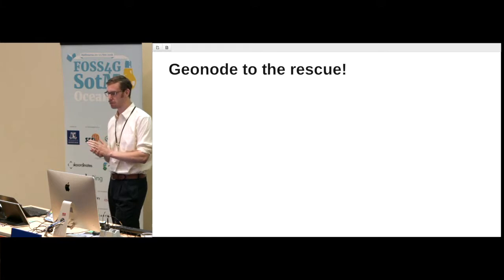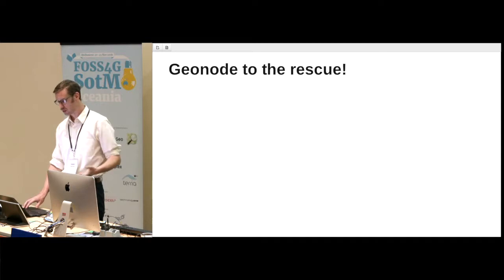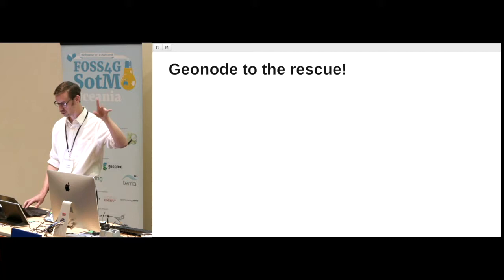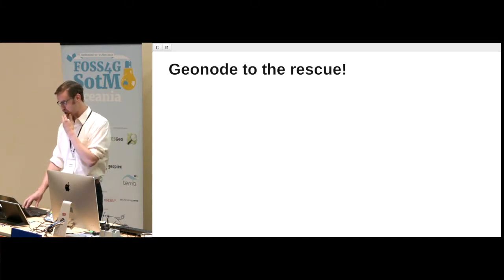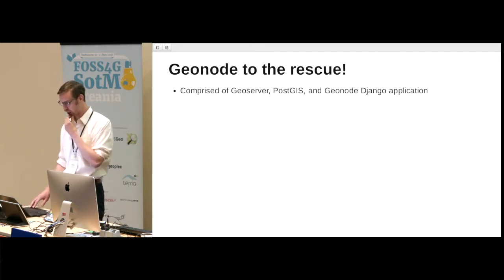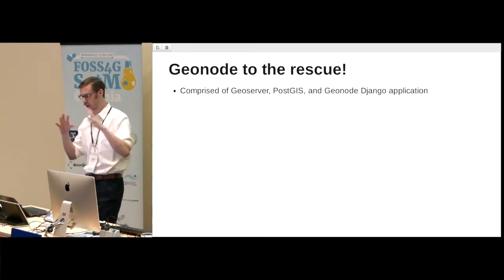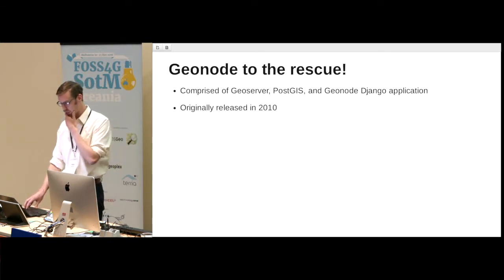So, GeoNode to the rescue. I've been working in the open source geospatial world for quite a while and had only vaguely heard about it until relatively recently — I was just using a GeoServer-based stack most of the time. It's comprised of GeoServer and PostGIS, but it also adds in a Django application. It was originally released in 2010, so it's been around a while.